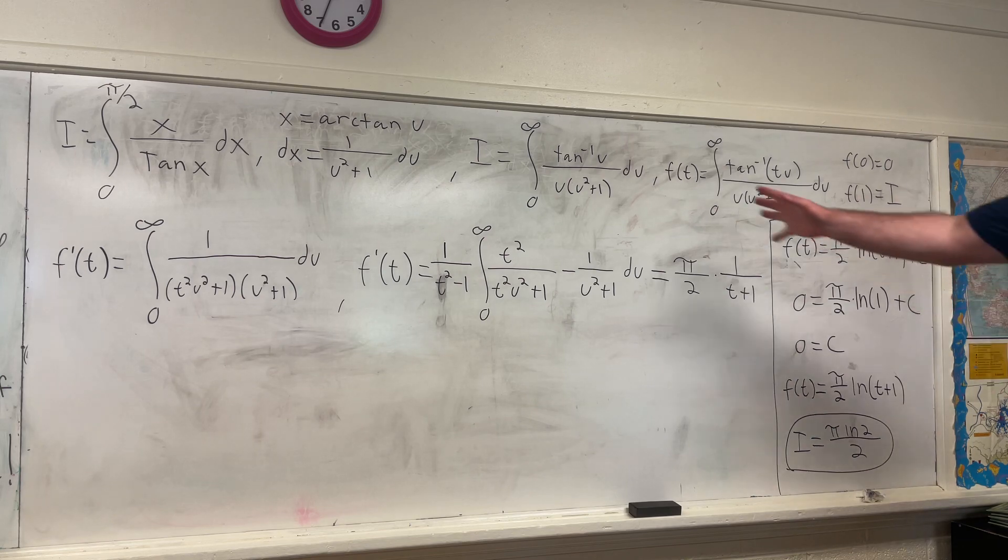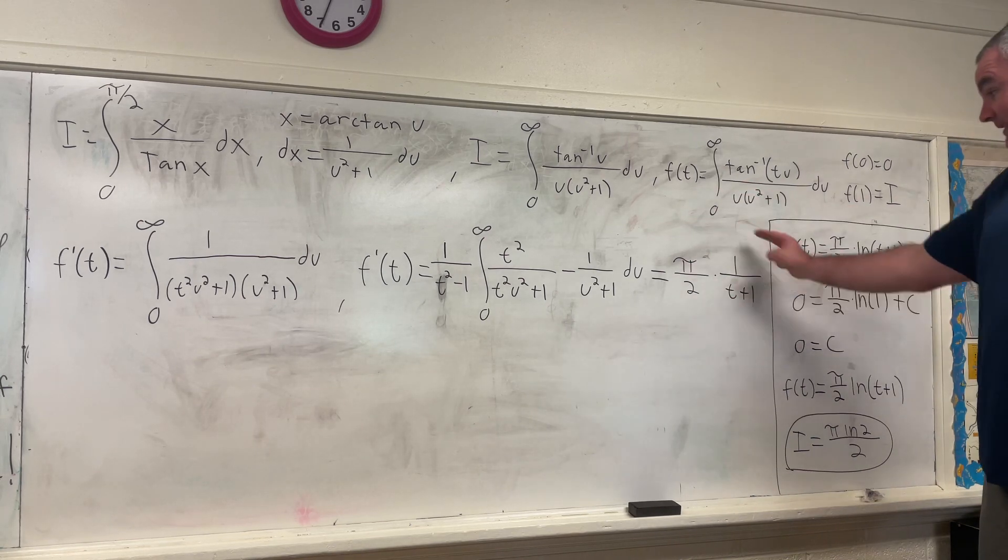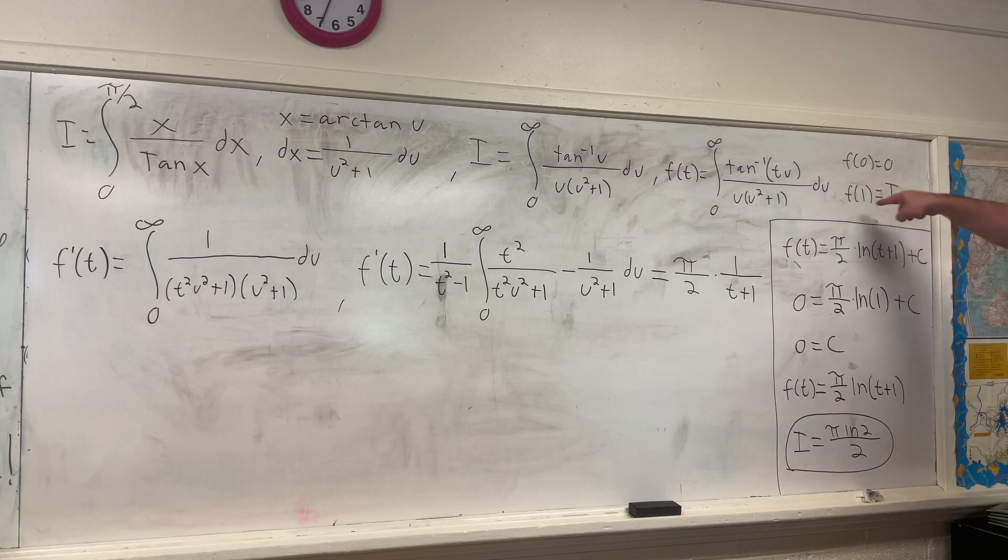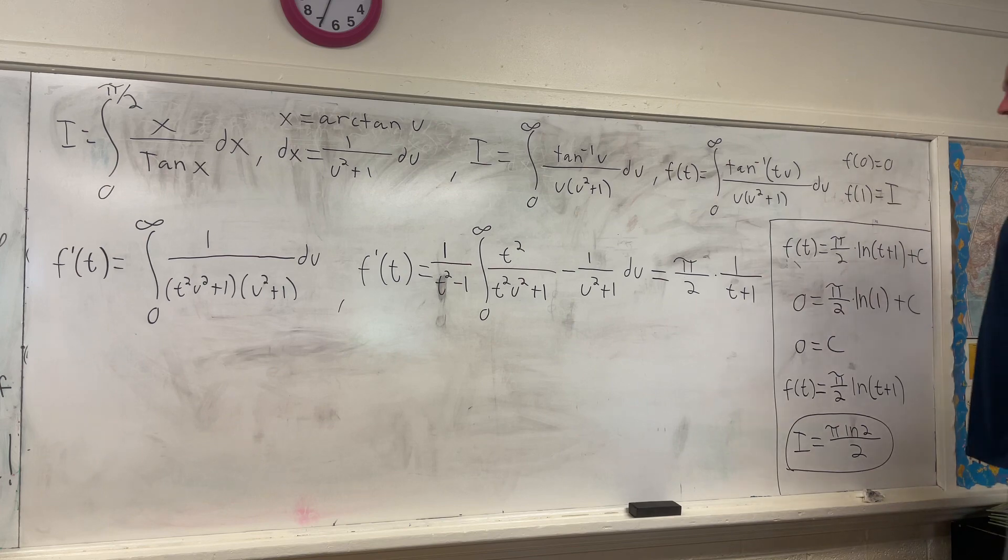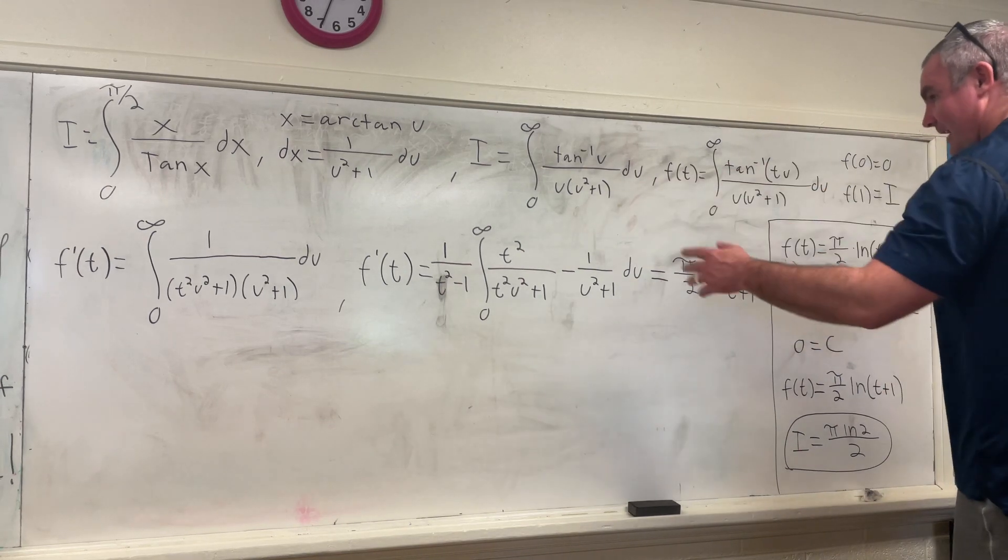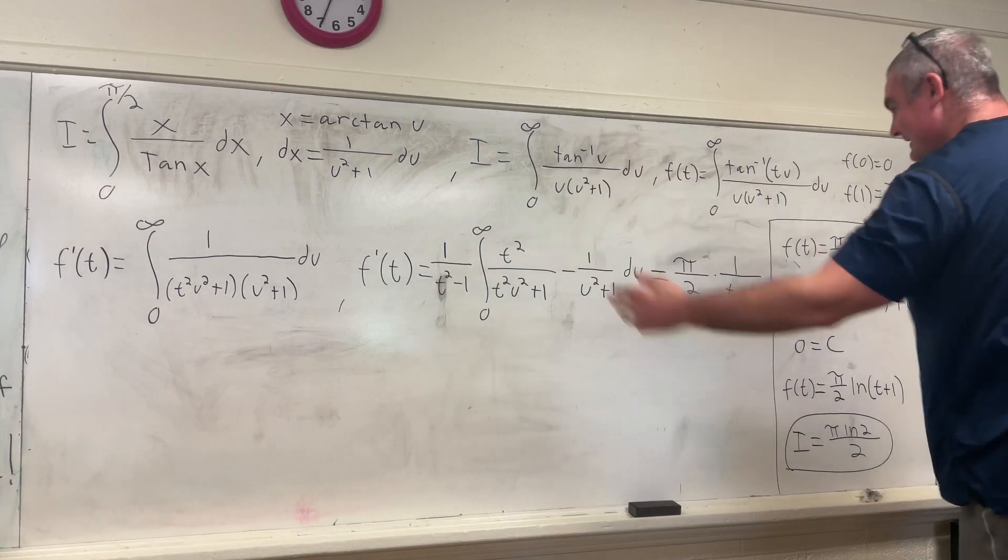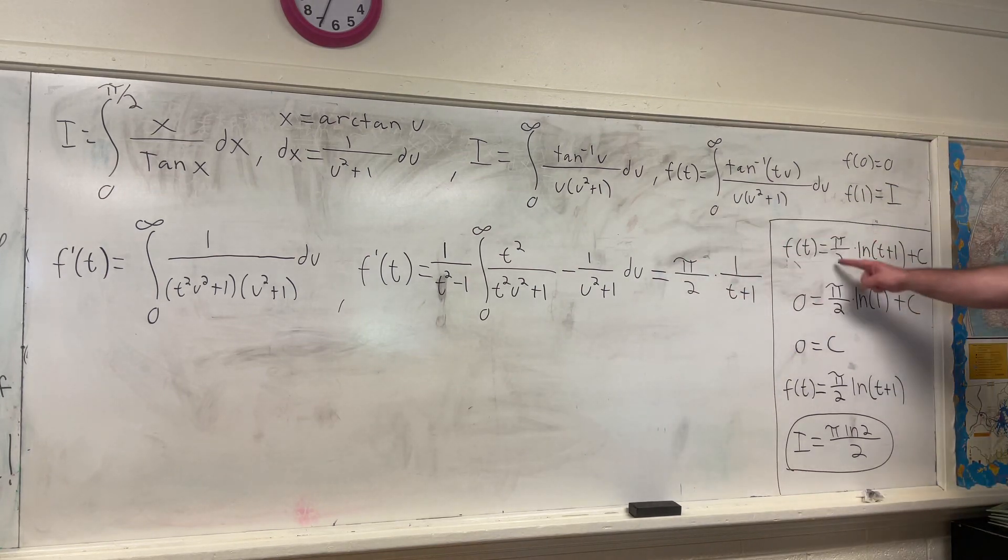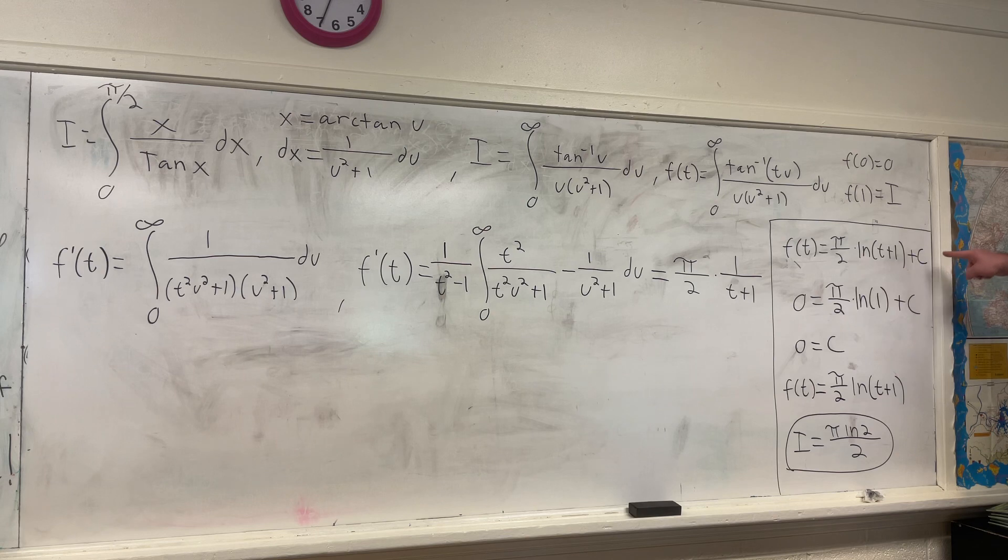So we have our f prime of t as just a very simple expression of t. So we want to go back to f of t so that we can plug in 1 to get i. So integrating both sides of that, f prime of t will give you f of t is equal to the integral with respect to t of this thing, which is right here. And we can't forget the plus c.